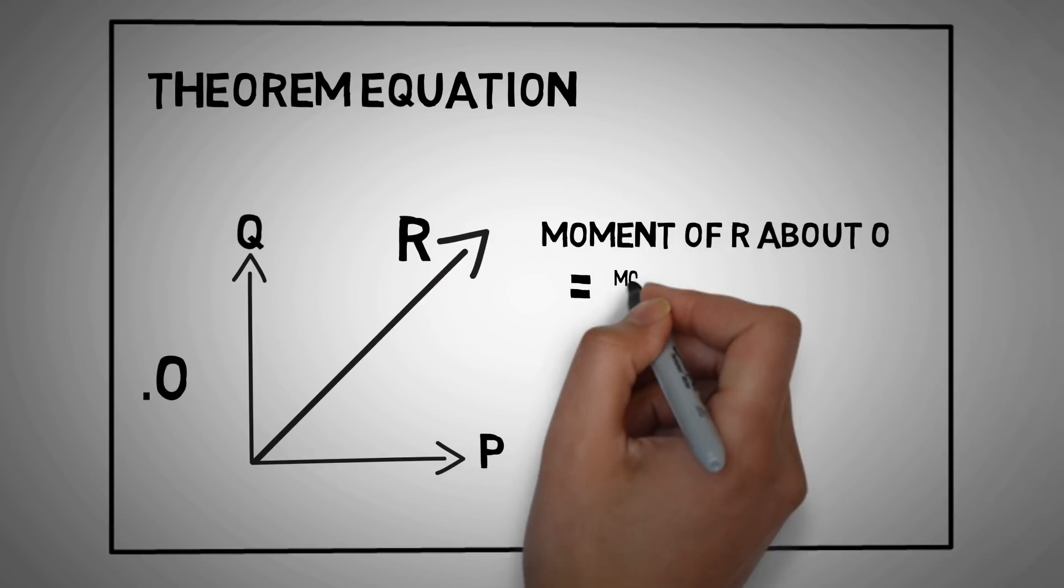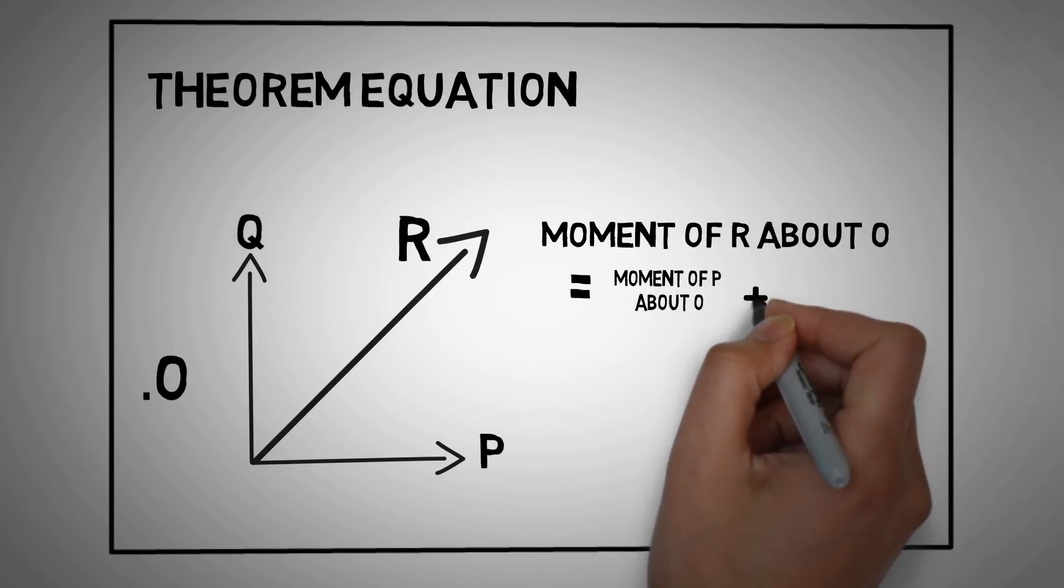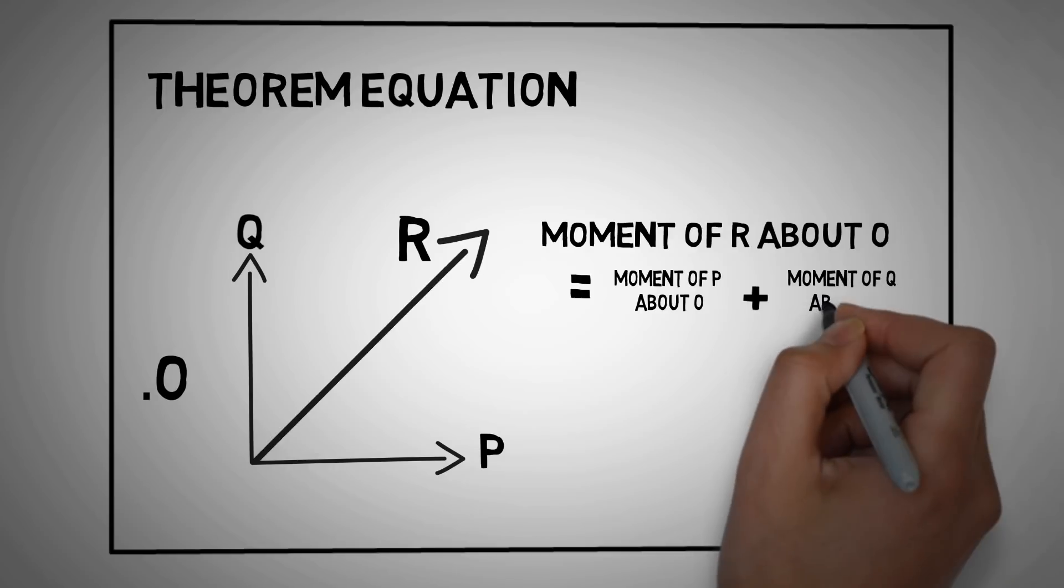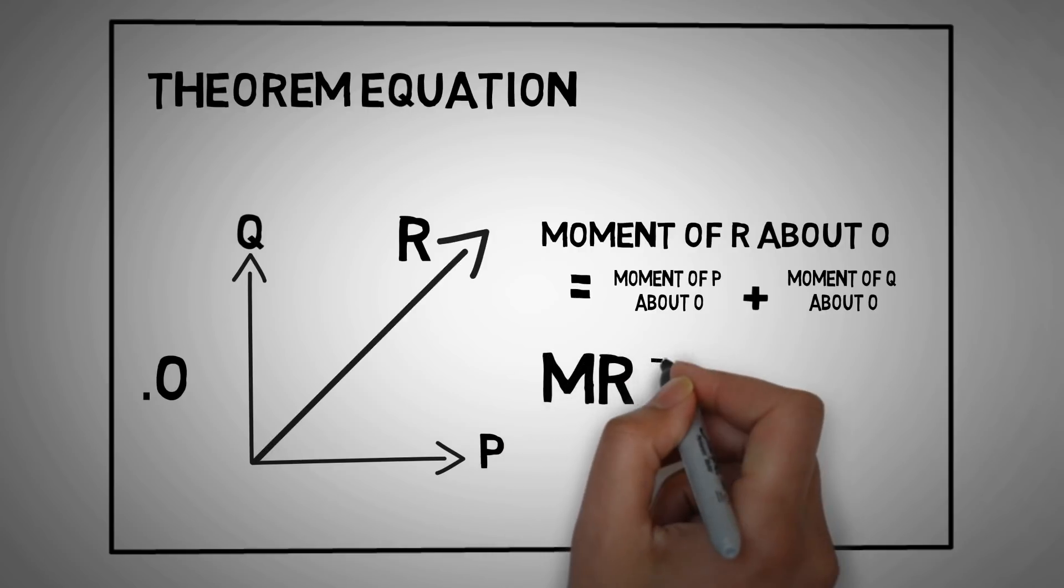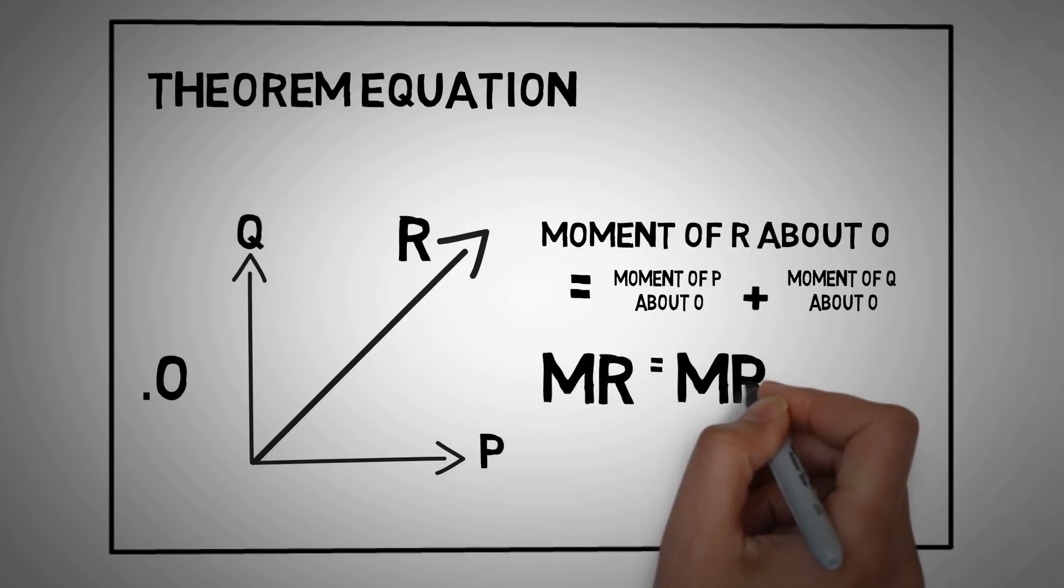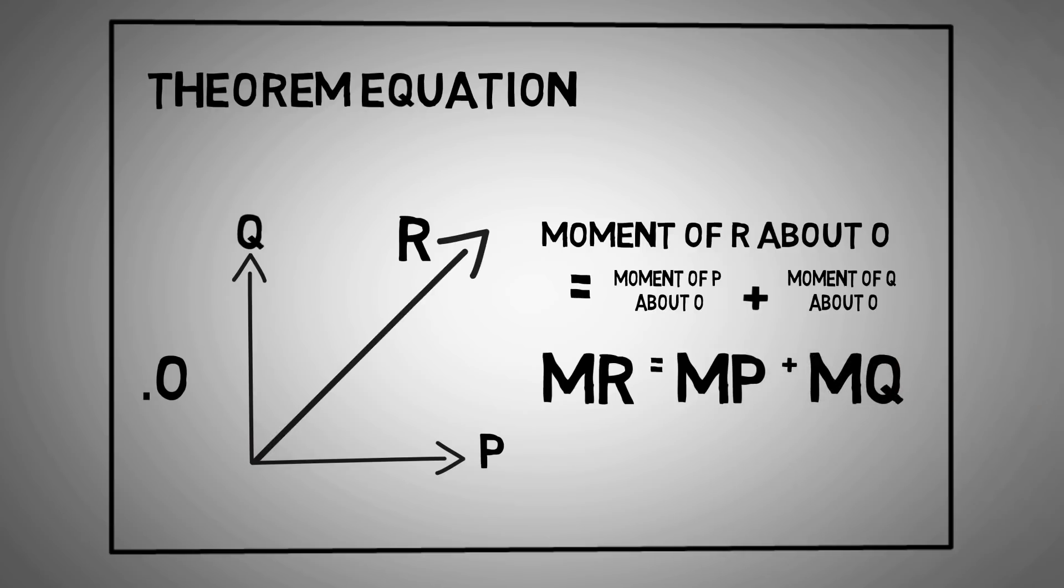the moment of force R about point O is equal to the moment of P about O plus the moment of Q about O. Let's call the three moments MR, MP and MQ. MR is equal to MP plus MQ.